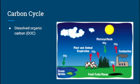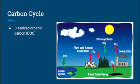The carbon cycle is the series of processes by which carbon compounds are interconverted in the environment, chiefly involving the incorporation of carbon dioxide into living tissue by photosynthesis and its return to the atmosphere through respiration, the decay of dead organisms, and the burning of fossil fuels. An example of the carbon cycle in lakes is dissolved organic carbon, or DOC. It refers to a broad group of molecules from the breakdown of organic matter in the watershed. DOC in lakes is one of the greatest reservoirs of organic matter on Earth, accounting for the same amount of carbon as the atmosphere and up to 20% of all organic carbon.